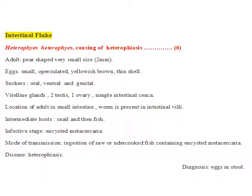Now about its suckers, there are three suckers — not two — which are the oral sucker, ventral sucker, and genital sucker. There is a viteline gland visible clearly, and two testes and one ovary with a simple intestinal structure. This parasite is hermaphroditic, meaning reproductive organs can be found within the same individual parasite.